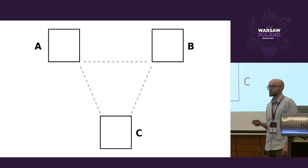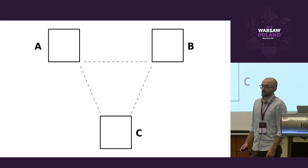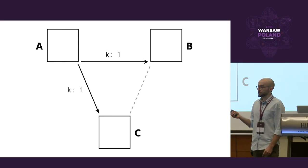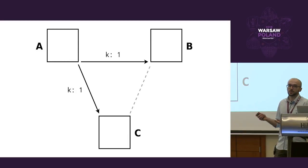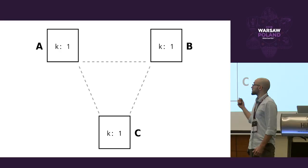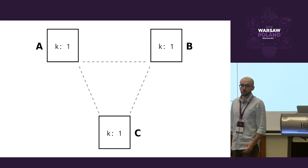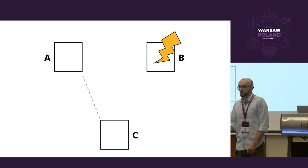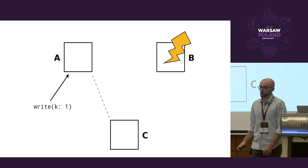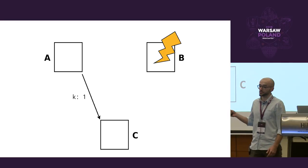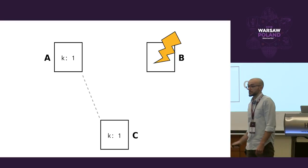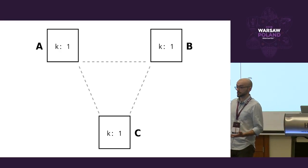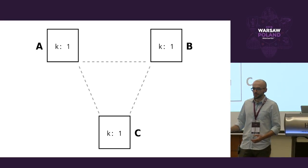In a healthy cluster with three nodes all up and running, if we write some value under a key on a single node using Mnesia, that node will coordinate the transaction between other nodes. If everything is up and running, the transaction will complete successfully and we will have the same data on every node in the cluster. If one node goes down, we can still start a transaction from any of the remaining nodes, and when the failing node comes back up it will catch up with its missing data.